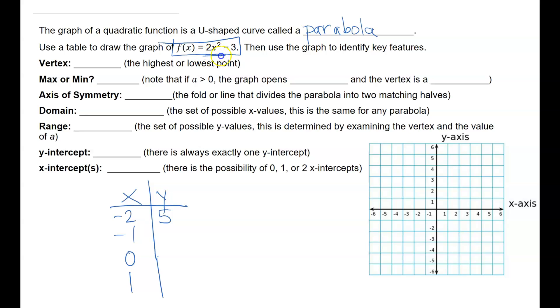If I make x negative 1, negative 1 squared is 1, 1 times 2 is 2, 2 minus 3 is negative 1. If I make x 0, 0 squared is 0, 0 times 2 is still 0, 0 take away 3 is negative 3. And if I make x 1, 1 squared is 1, 1 times 2 is 2, 2 minus 3 is negative 1. Now I hope you're starting to see a little bit of a pattern emerging here.